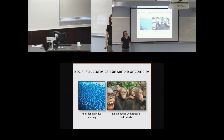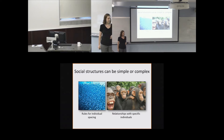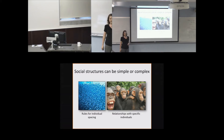Social structure can range from very simple to much more complex. For example, in fish you might have a very simple social structure where interactions among individuals are determined by simple rules such as individual spacing or reactions to their neighbor's behavior. Relationships and social structures can then become much more complex, especially when individuals form relationships with specific other individuals in the group—what I'll be referring to as an individualized relationship in the rest of the talk.